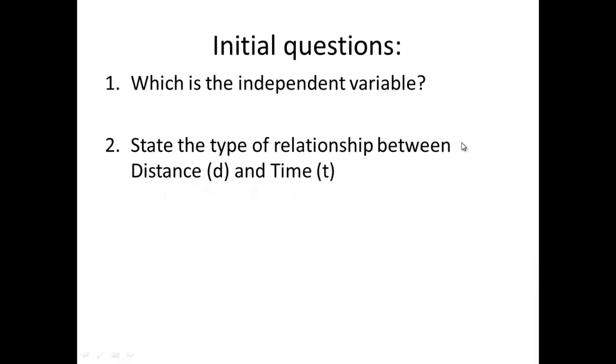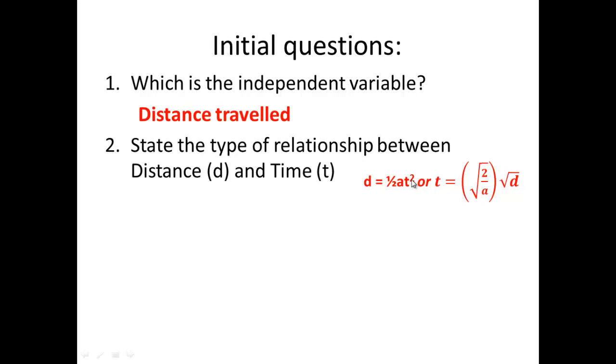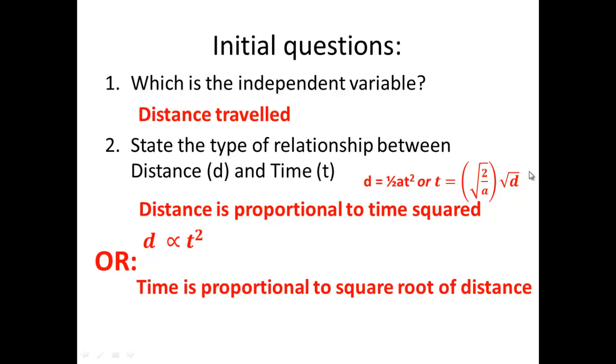Let's have a look at our variables. What's our independent? The thing that we're changing is the distance our trolley travels. What's the relationship between distance and time? We see that distance equals time squared, so distance is proportional to time squared, d ∝ t². The opposite is also true: time is proportional to the square root of distance, t ∝ √d.